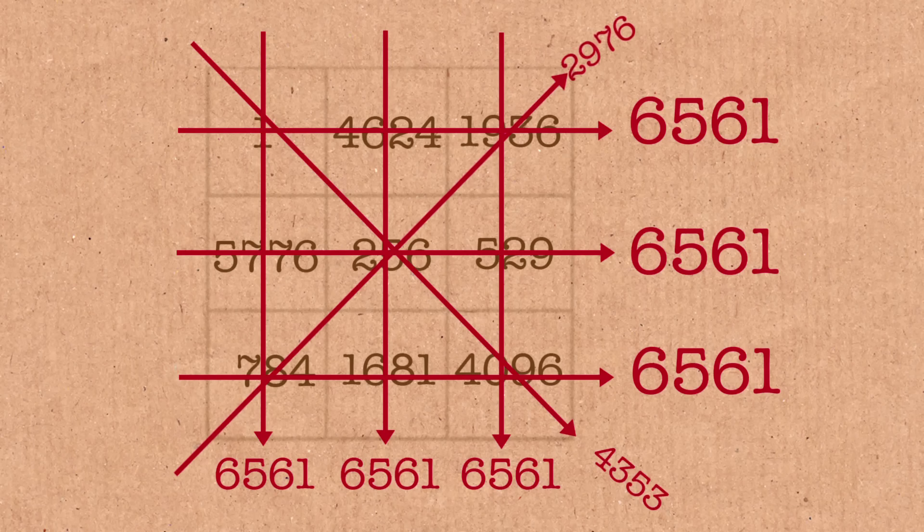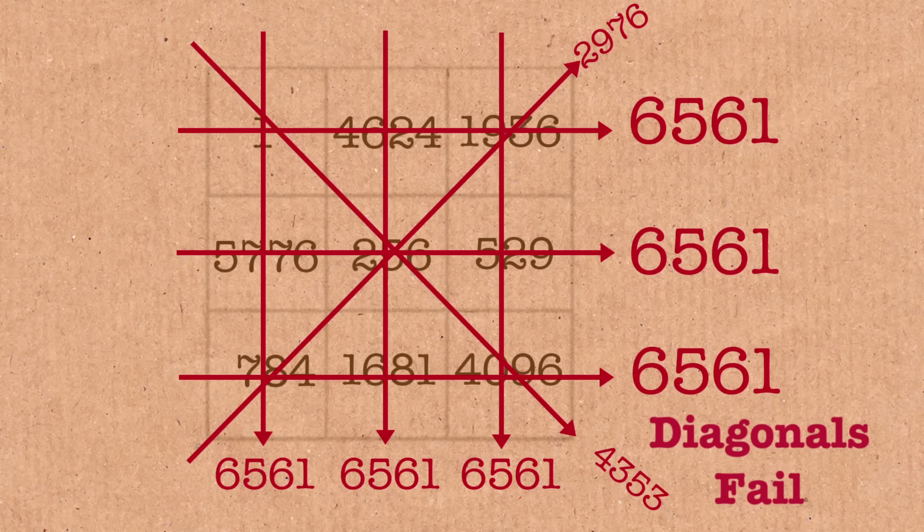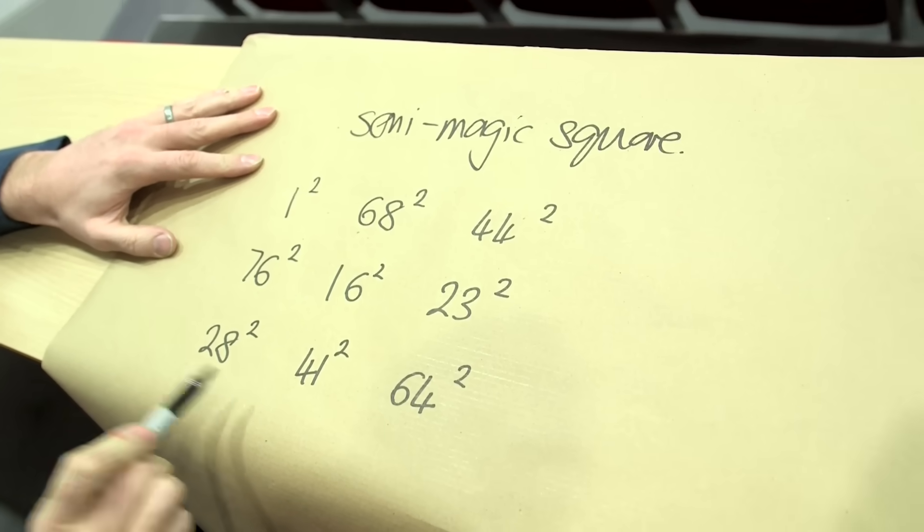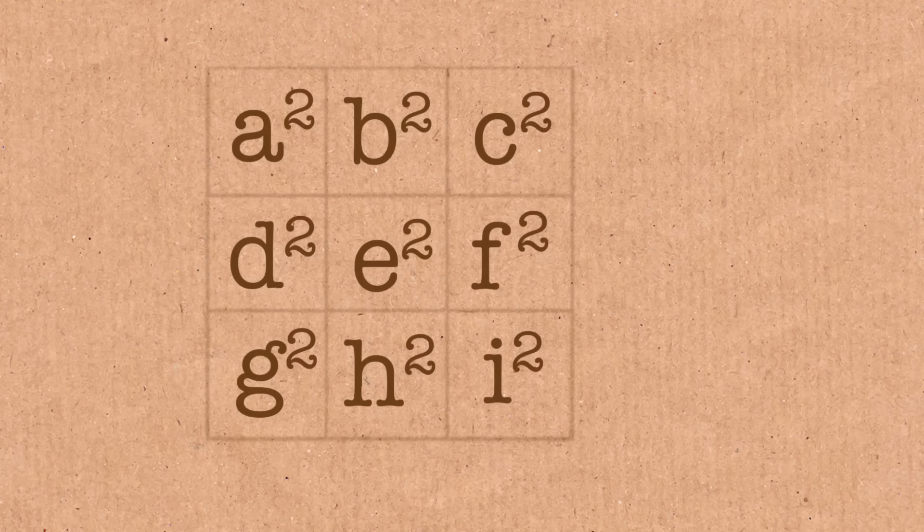All the rows add to the same number and the columns add to the same number. No one has ever found a magic square that works properly - both diagonals - and all the numbers are square numbers.